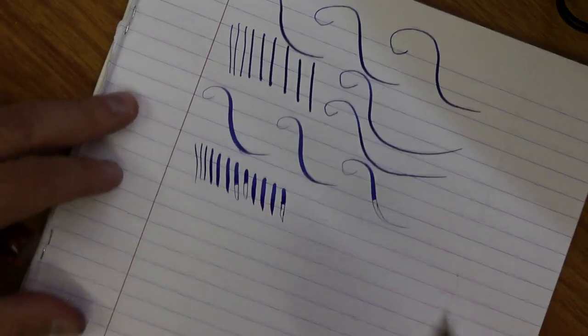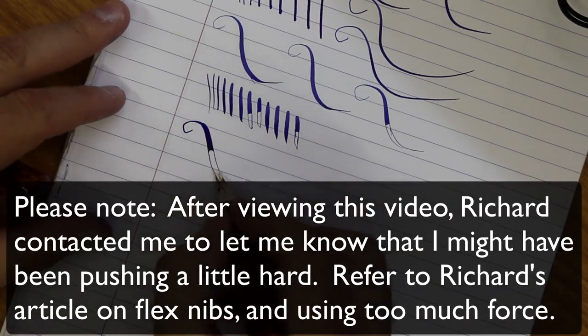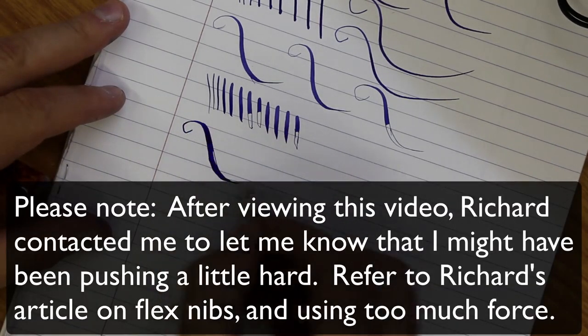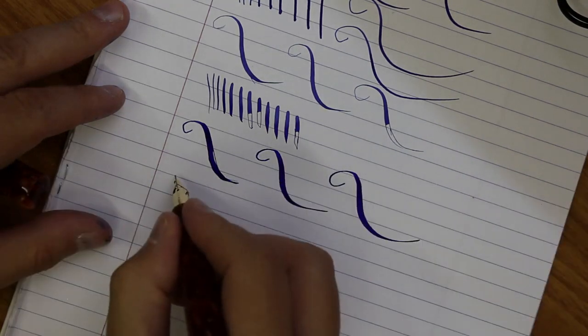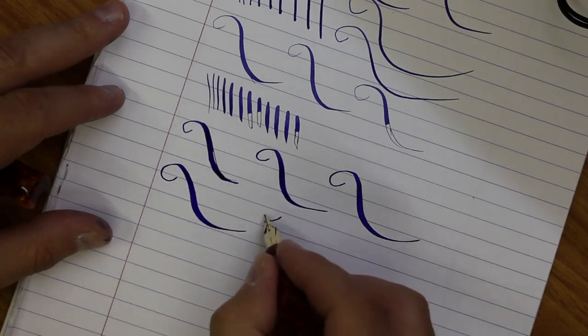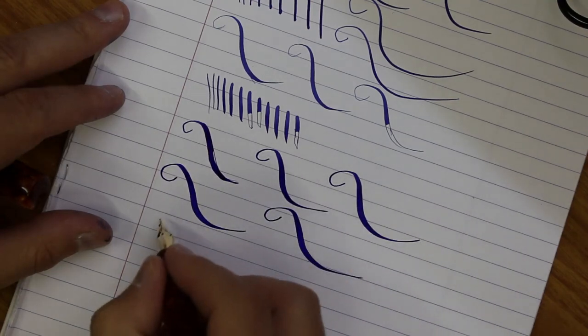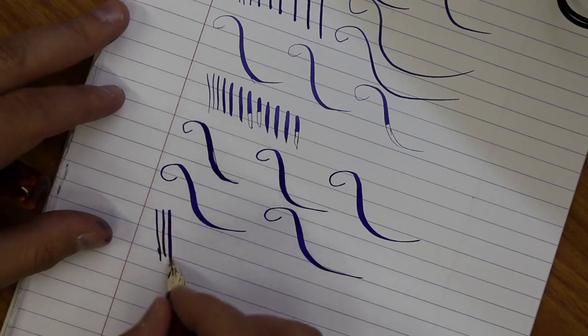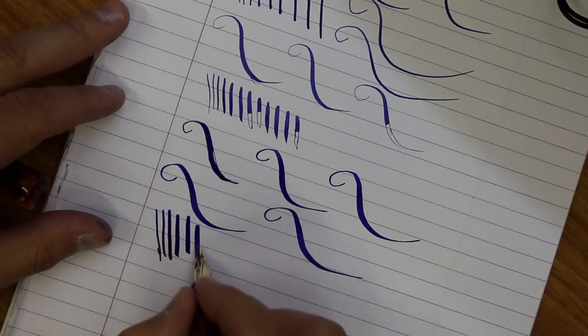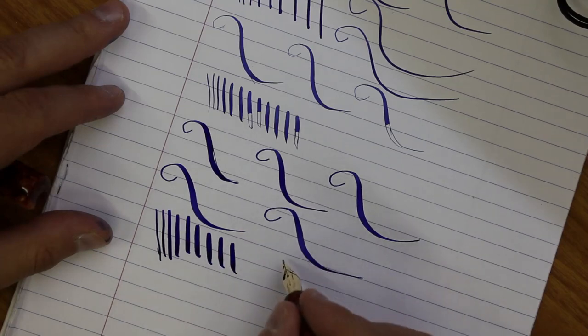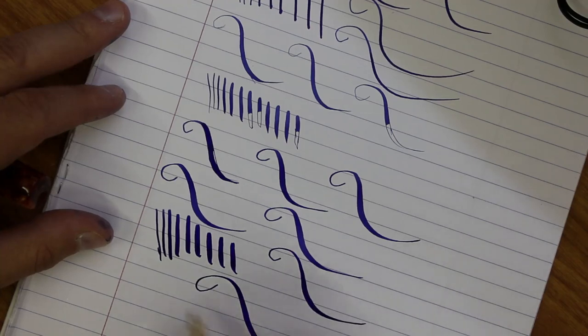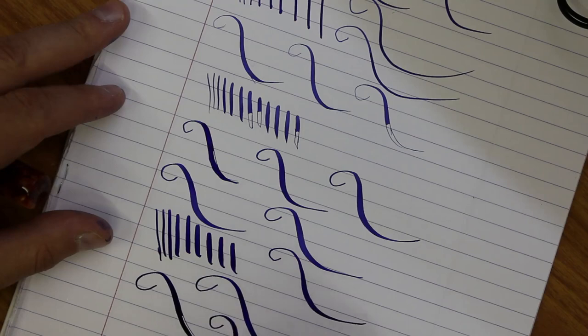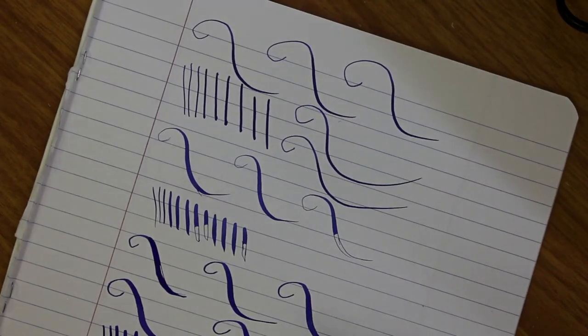And then this is the Richard Binder nib. Little railroad there. It gets awfully thick when it wants to. So again, awfully impressive that a little railroad there.